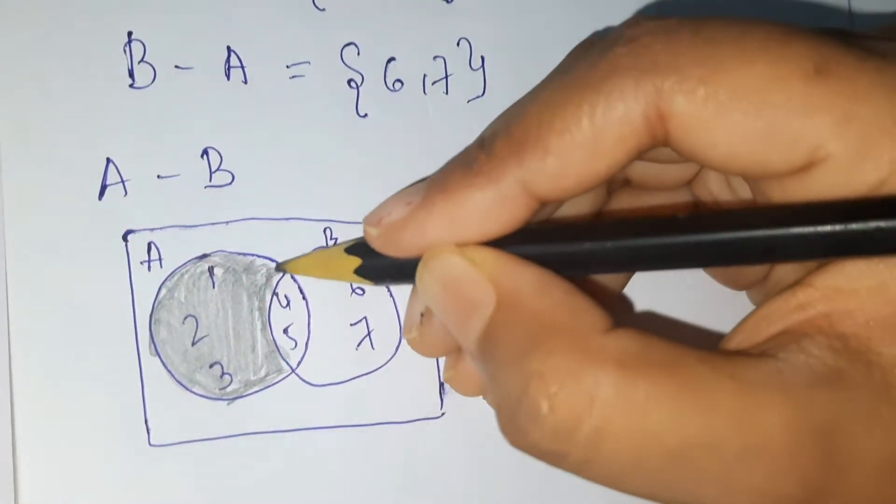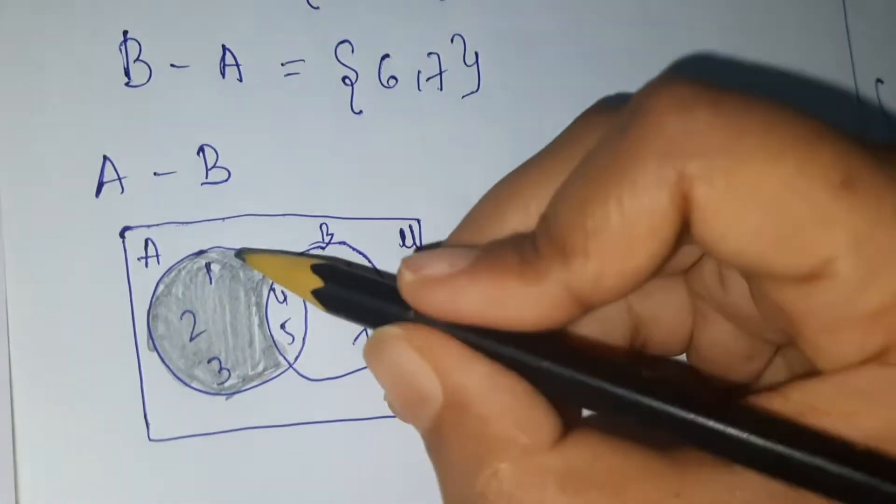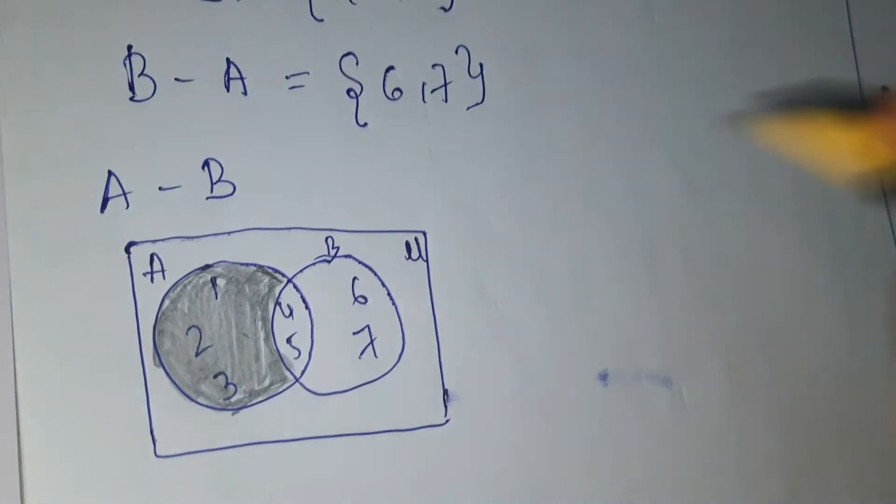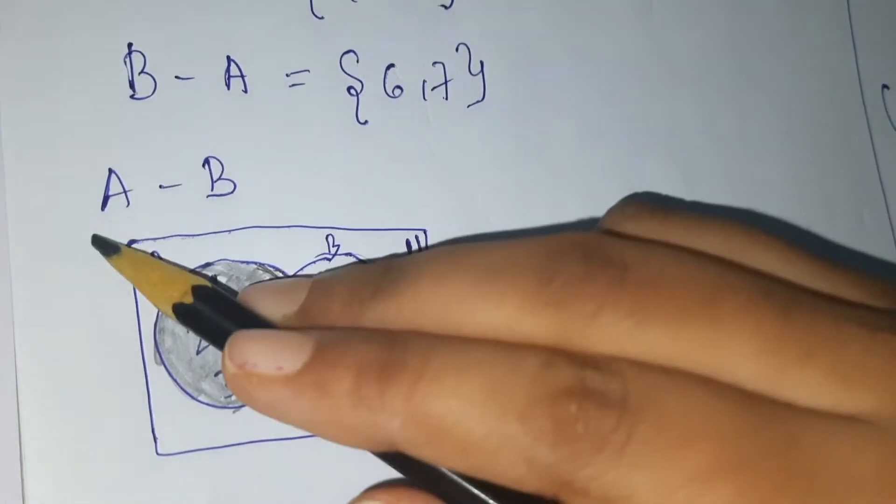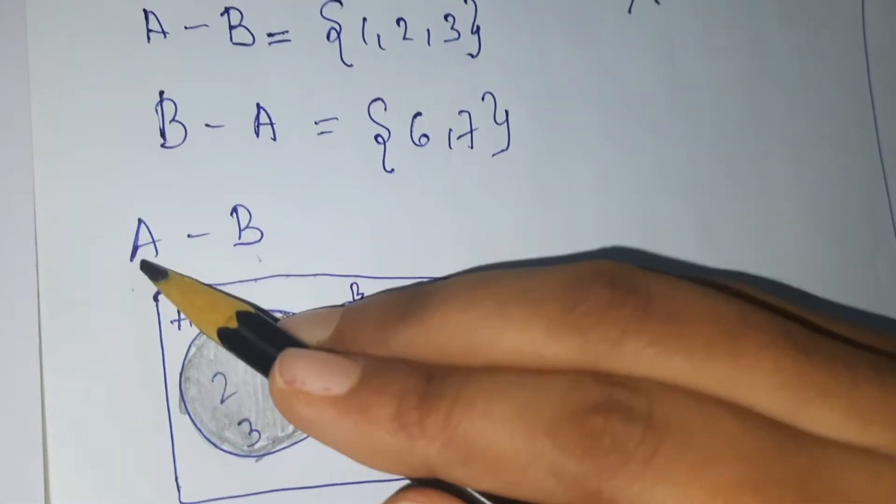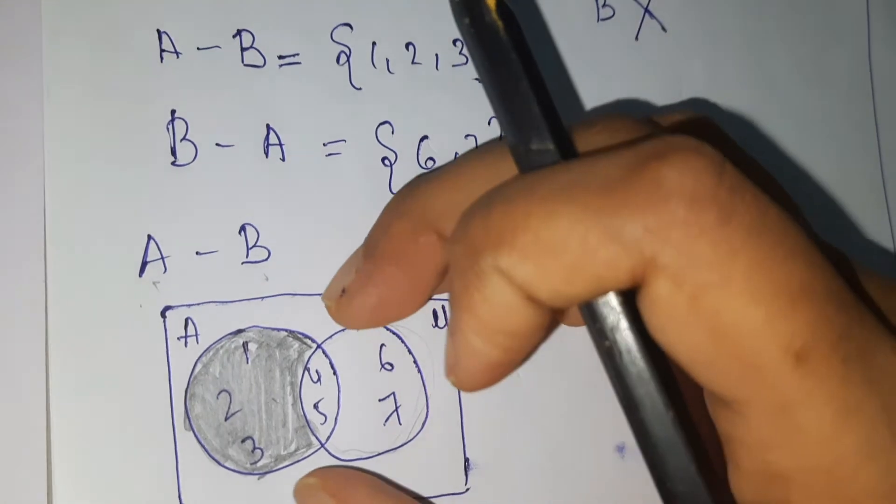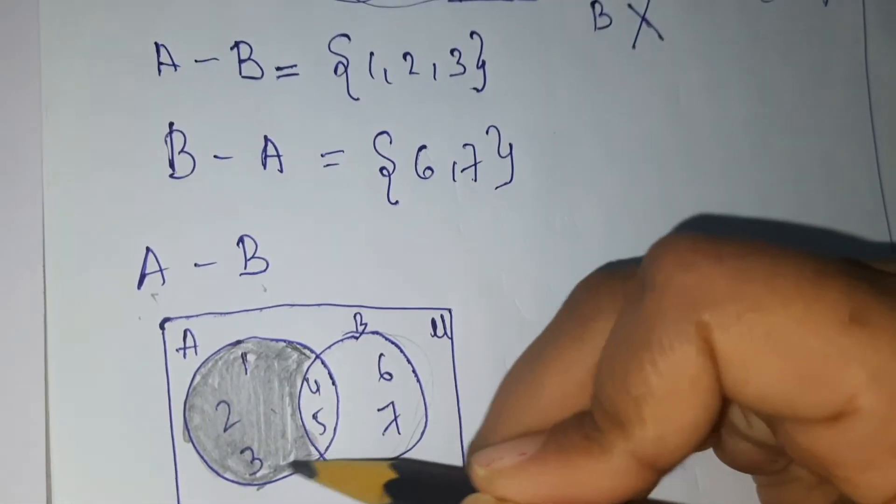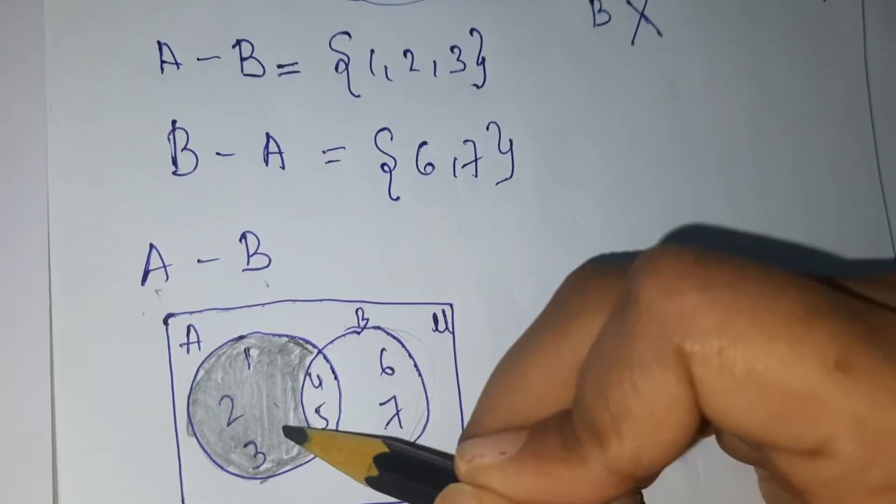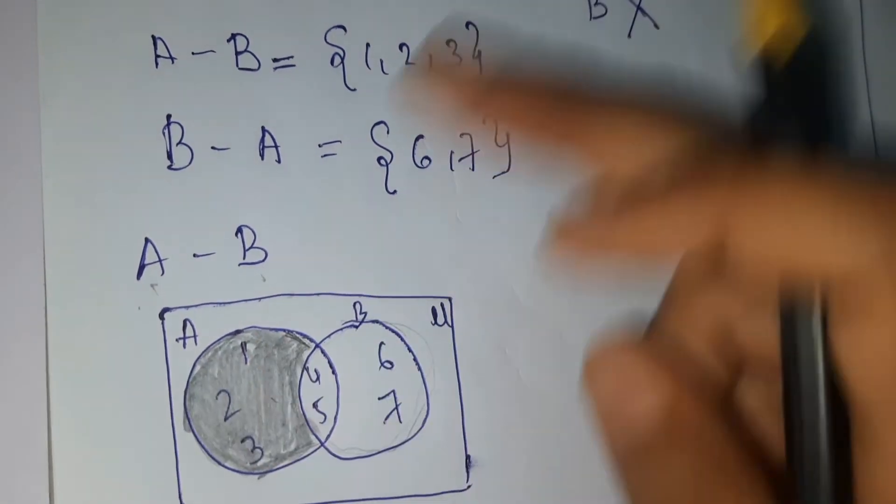Here the shaded region is our answer. The shaded region is what? One, two, three. See, B, when we're subtracting B from A, we have to remove B entirely. That means common element also we have to remove. And whatever remains in A, that is A minus B.